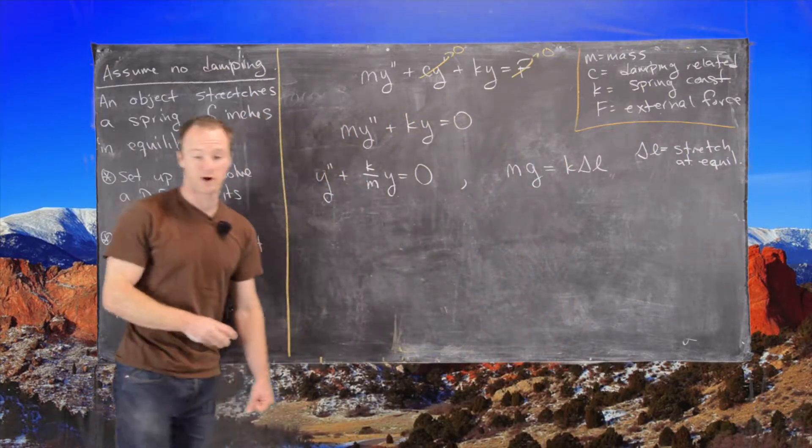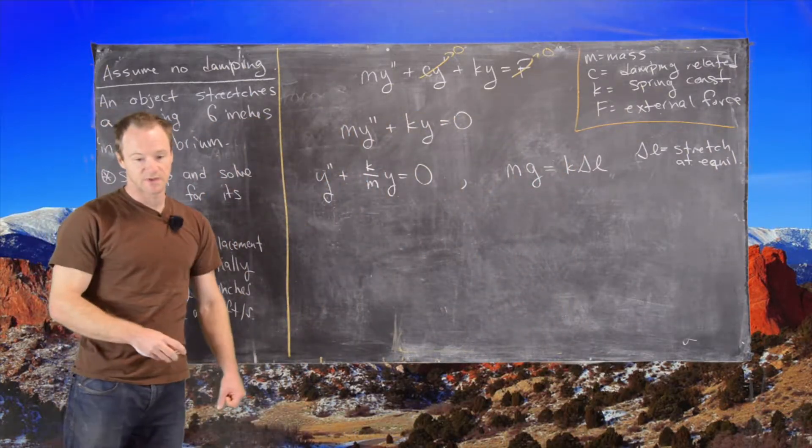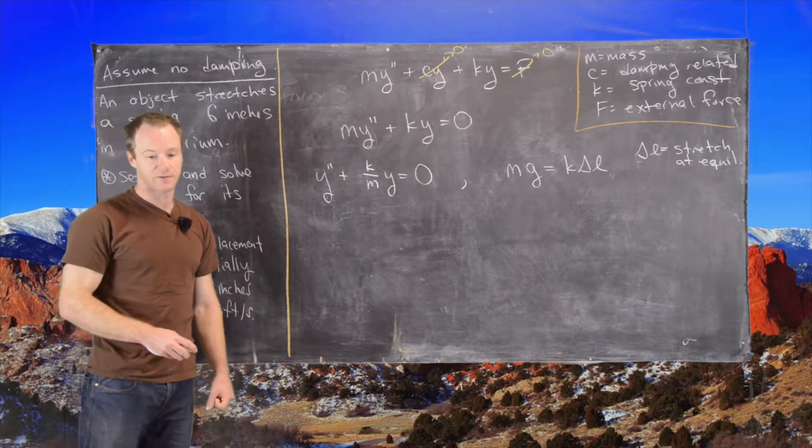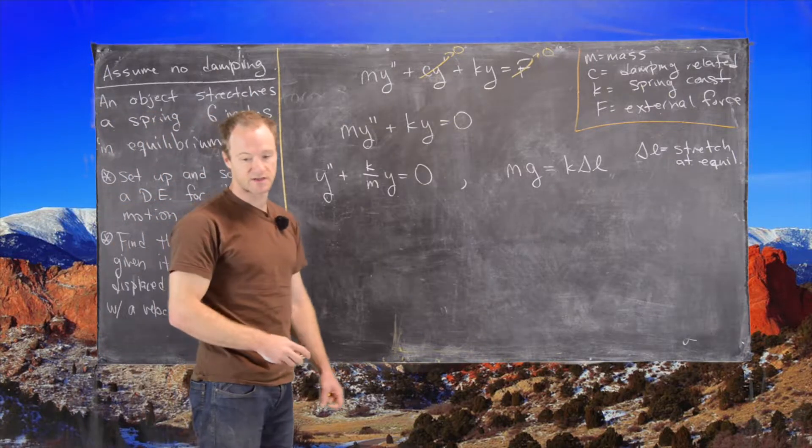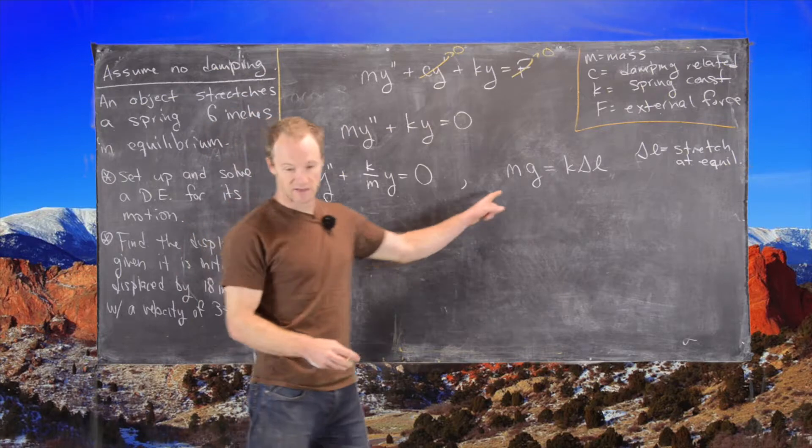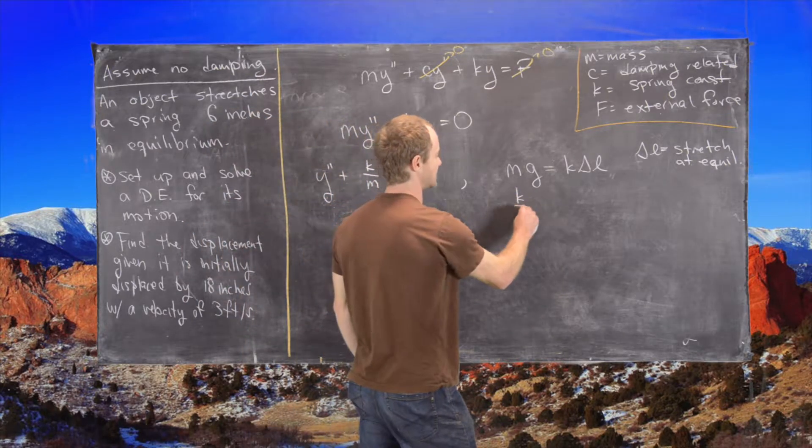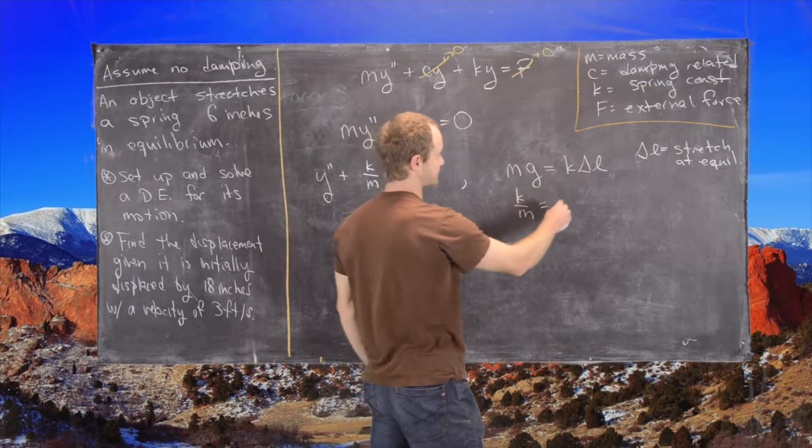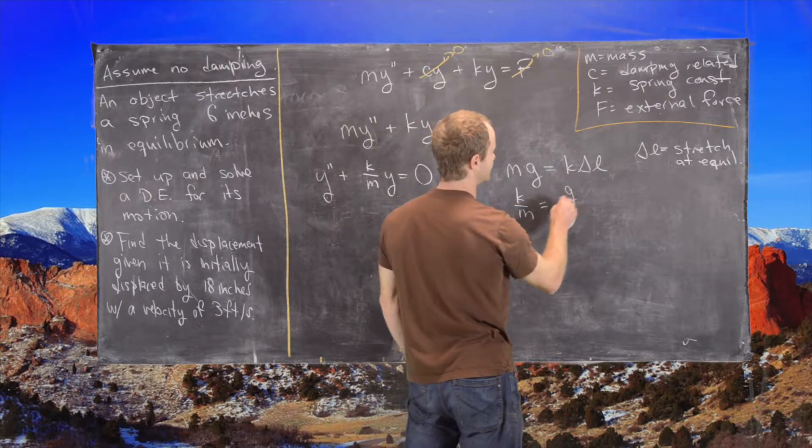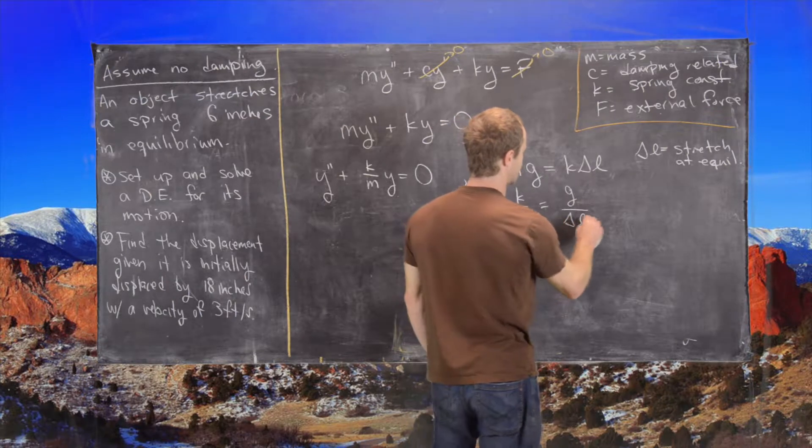And so we're given that is six inches. So let's see what we can do from there. That tells us that we can solve this for k over m. So that means k over m equals the force due to gravity over delta L.